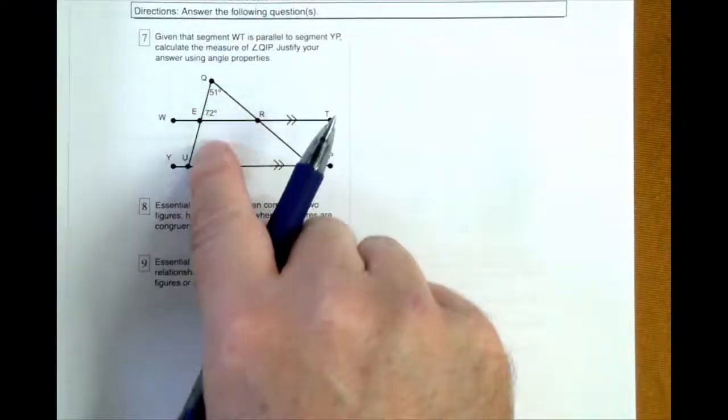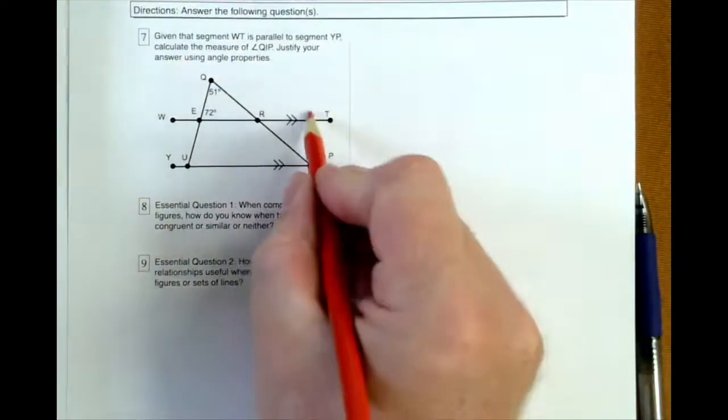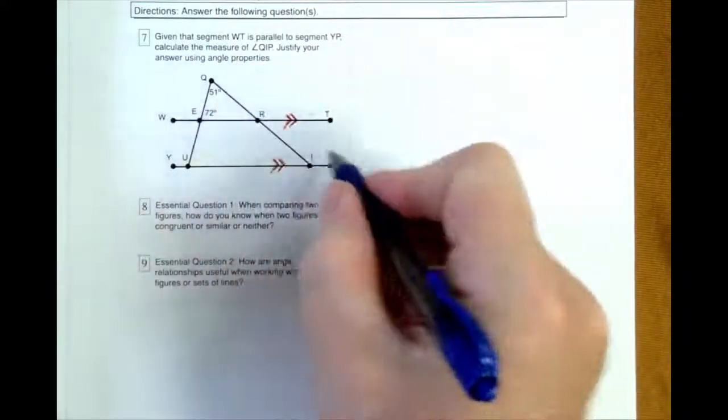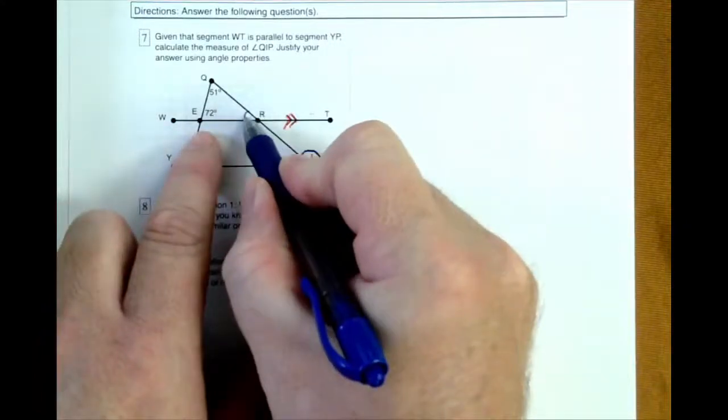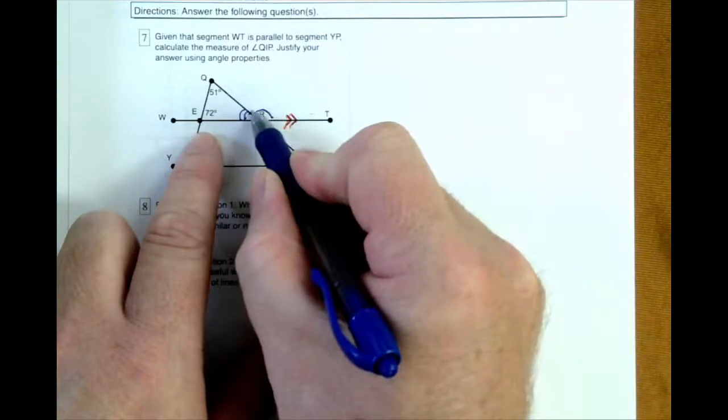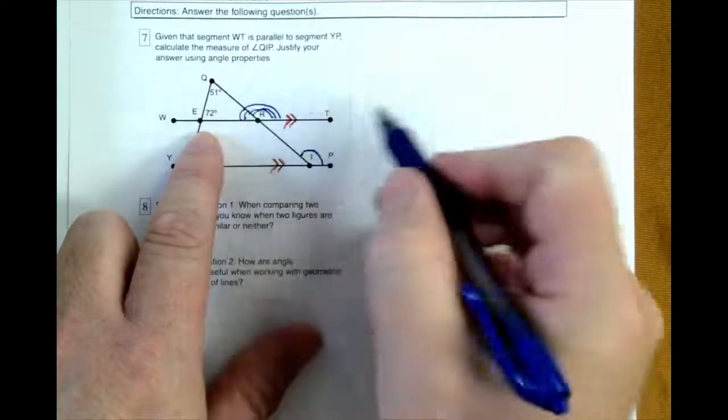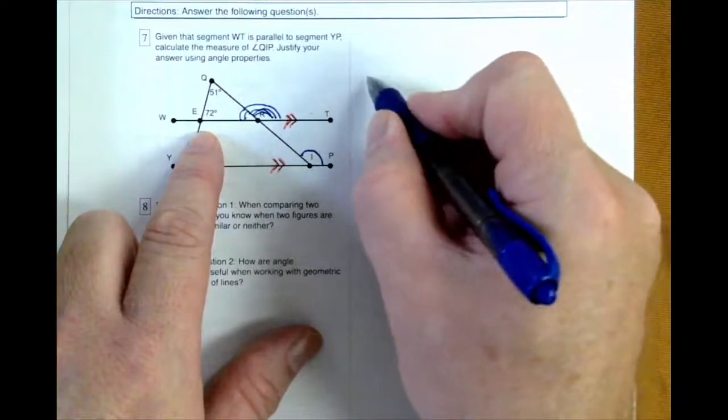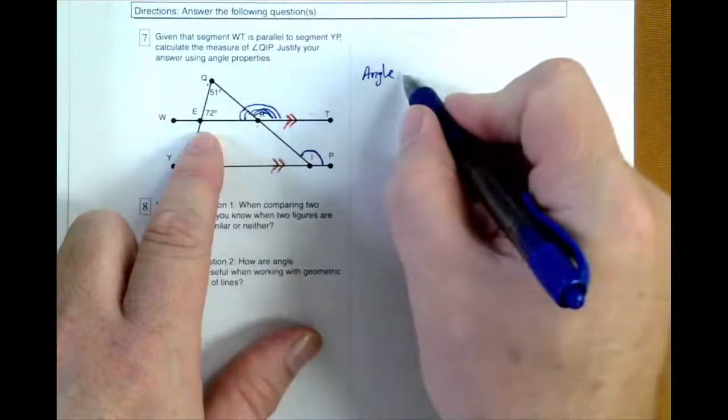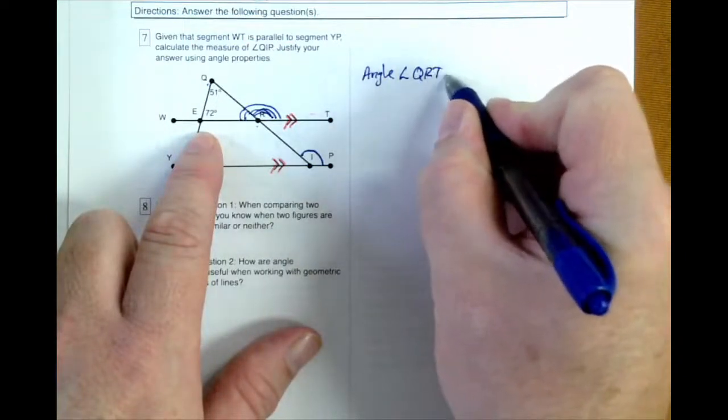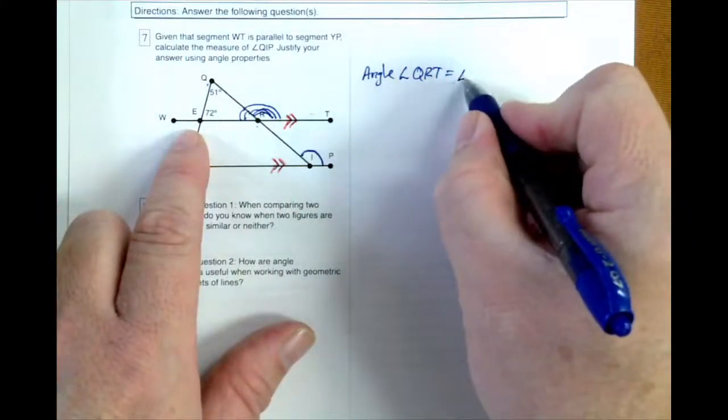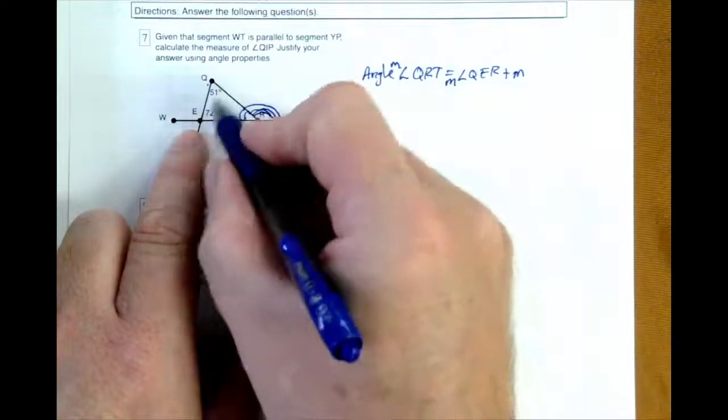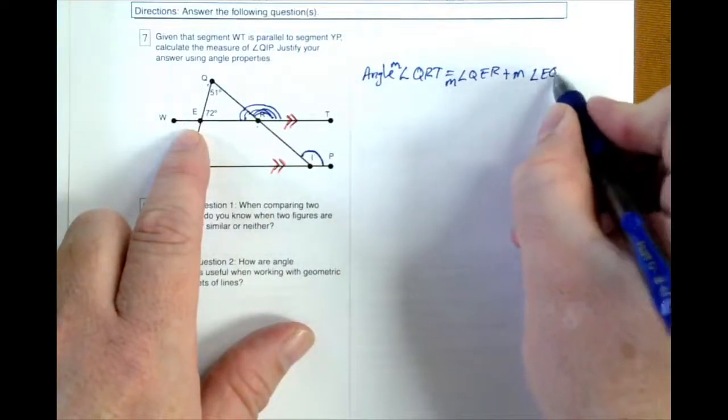All right. Given that the segment WT is parallel to segment YP, so we've got these parallel lines. We're looking for QIP. That's this one. Well, we had two ways of doing that. We did the triangle. We looked for this angle, we looked for this angle, or we looked for this outside angle. That was the two-step process. It was a little bit easier. So, we'll do the easier proof where we said, oh, okay. Well, we know that angle QRT is equal to QER. That's the measure. Plus the measure of EQR.